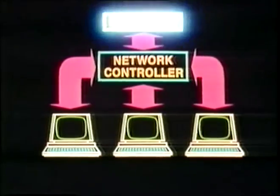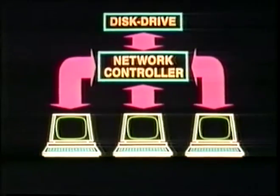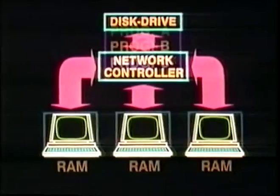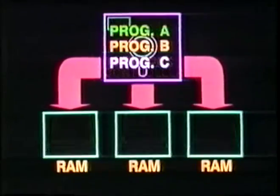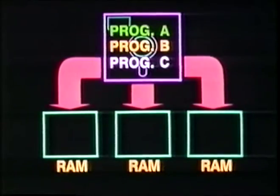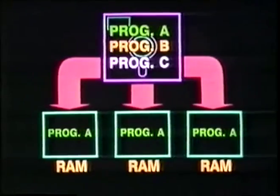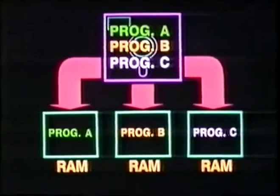The simplest way to link computers together is via a network controller and a disk drive. This enables all the computers to load any of the contents of a single disk into their RAM memories. They can all load the same program, or each of them can load a different program from the same disk.